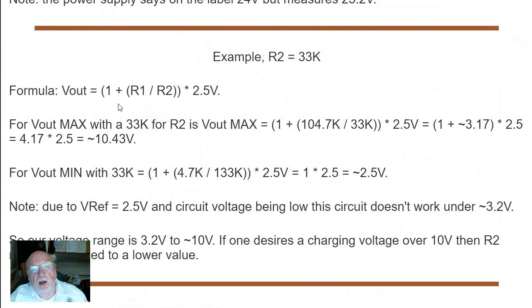Here is your formula: Vout equals 1 plus R1 divided by R2 times 2.5. For Vout max with a 33K resistor for R2 is 1 plus 104.7K divided by 33 times 2.5. That equals 1 plus approximately 3.17 times 2.5, and it comes out to be approximately 10.43 volts.